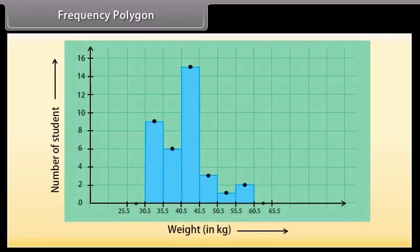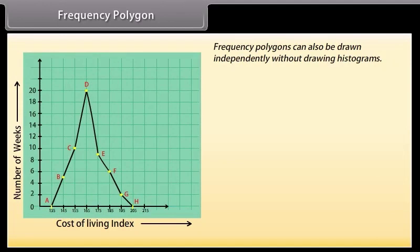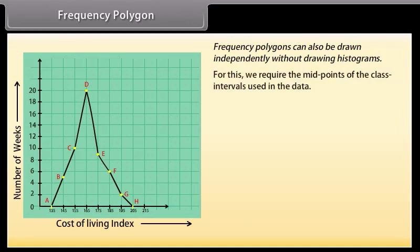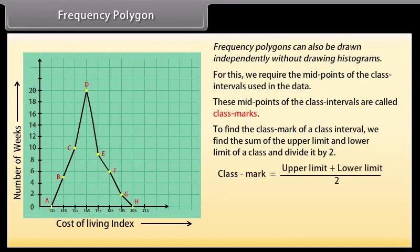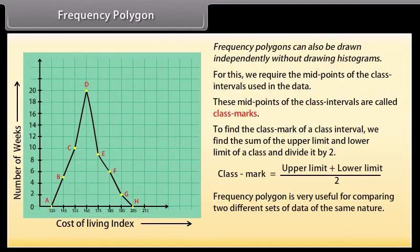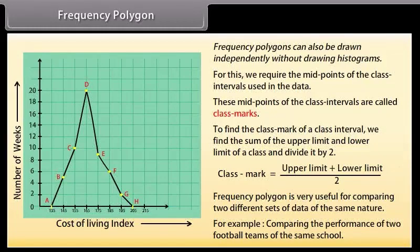In a frequency polygon, a line graph is drawn by joining all the midpoints of the top of the bars of a histogram. Frequency polygons can also be drawn independently without drawing histograms. For this we require the midpoints of the class intervals used in the data. These midpoints of the class intervals are called class marks. To find the class mark of a class interval, we find the sum of the upper limit and lower limit of a class and divide it by 2. Thus class mark is equal to upper limit plus lower limit whole upon 2. Frequency polygon is very useful for comparing two different sets of data of the same nature, for example comparing the performance of two football teams of the same school.